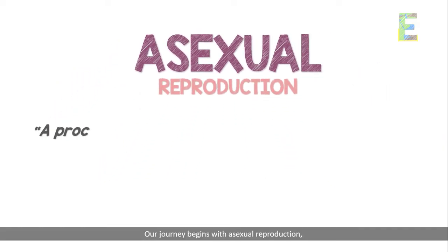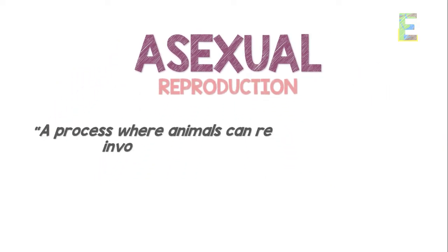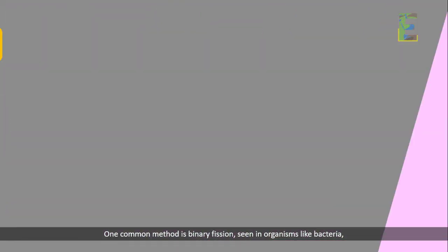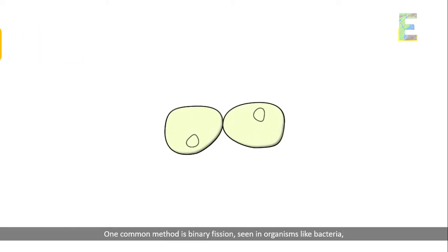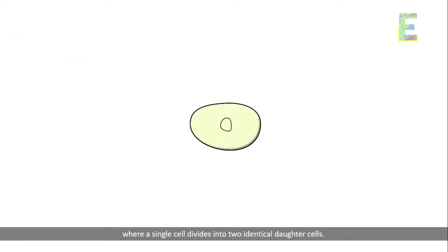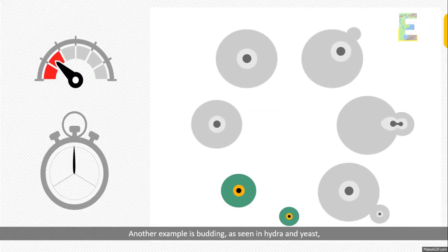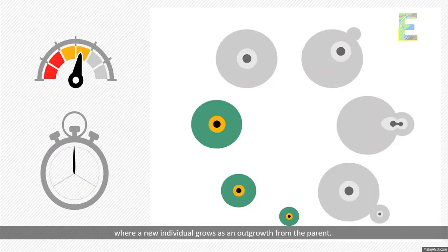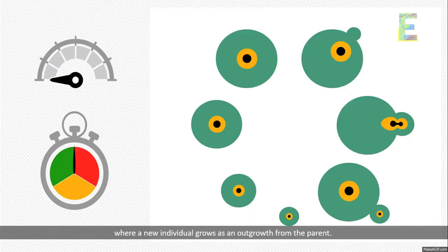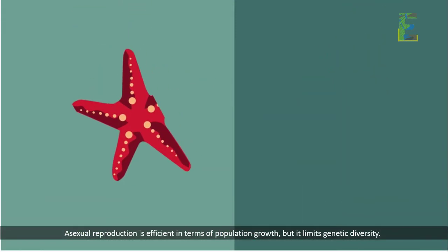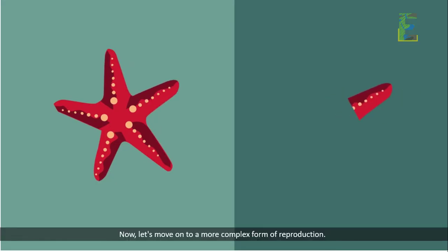Our journey begins with asexual reproduction, a process where animals can reproduce without the involvement of another individual. One common method is binary fission, seen in organisms like bacteria, where a single cell divides into two identical daughter cells. Another example is budding, as seen in hydra and yeast, where a new individual grows as an outgrowth from the parent. Asexual reproduction is efficient in terms of population growth, but it limits genetic diversity.